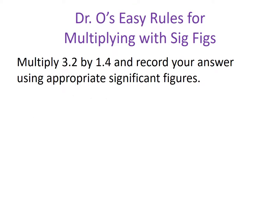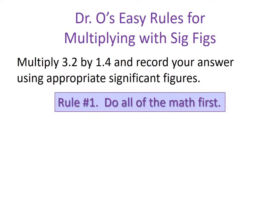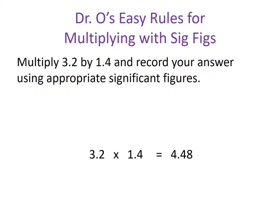Let's say we had a problem where we are being asked to multiply two numbers and record our answer in the correct number of significant digits. Rule number one says do all the math first. So we have 3.2 times 1.4 and that equals 4.48. And with that, we're done with rule number one.